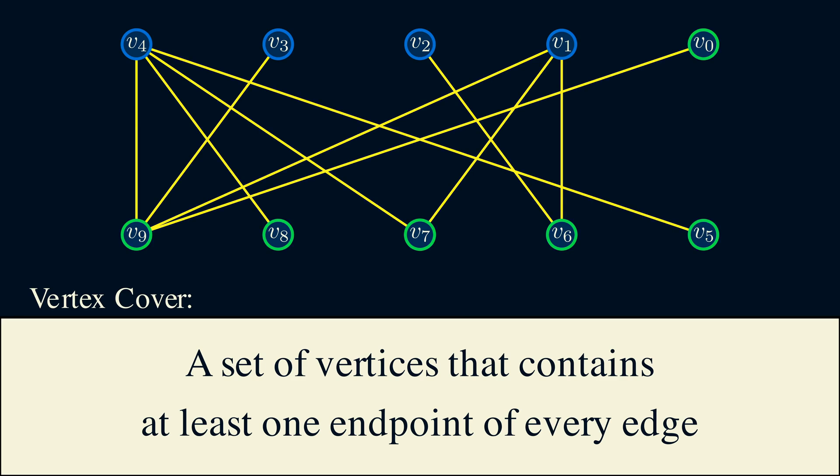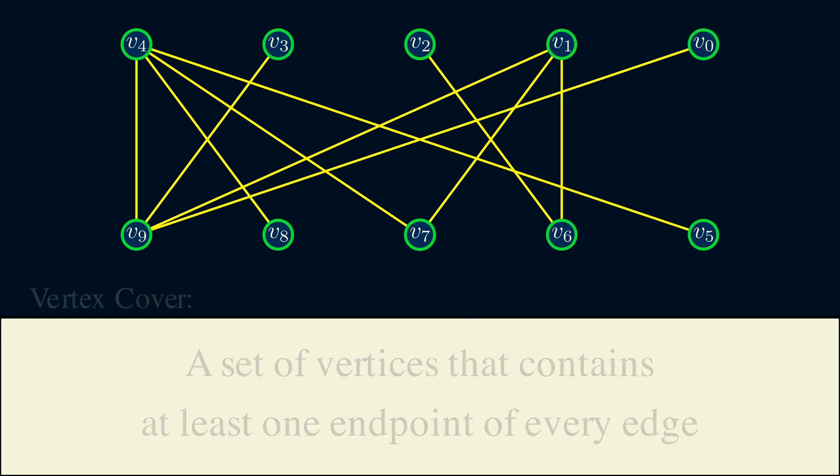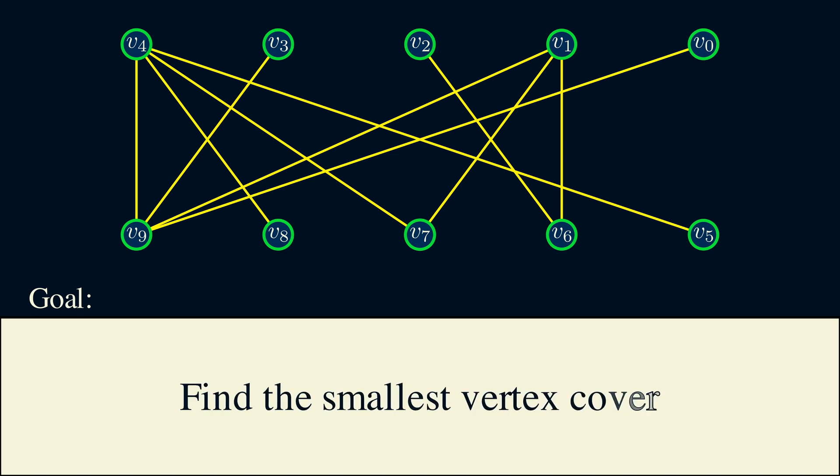Now, finding a vertex cover isn't hard. You can always just take the set of all vertices and this would trivially cover all edges. So the goal should not be to find any vertex cover, but to find a vertex cover with the smallest size. How do we find a smallest size vertex cover? Maybe we can try to remove vertices, starting with the ones that cover the least number of edges. Now we have a vertex cover of size 4, but could there be an even smaller one?